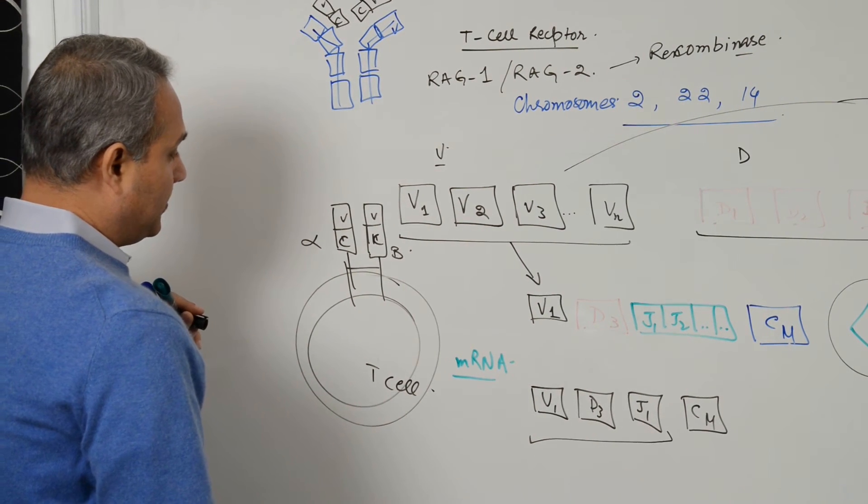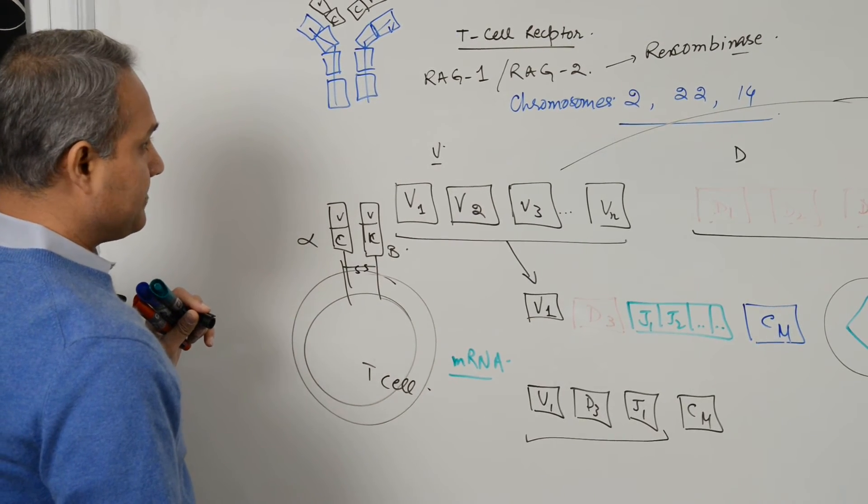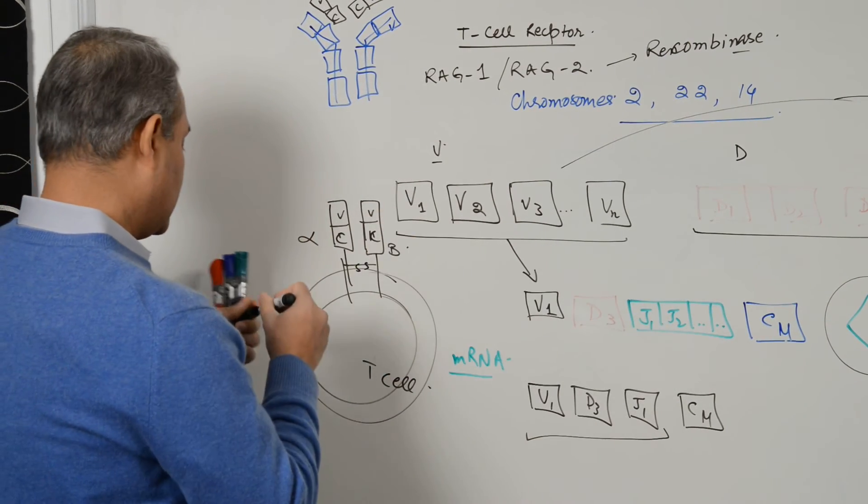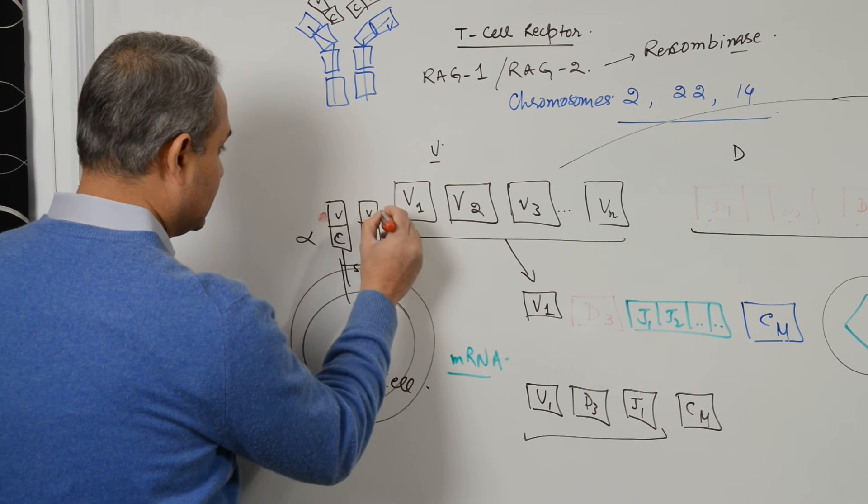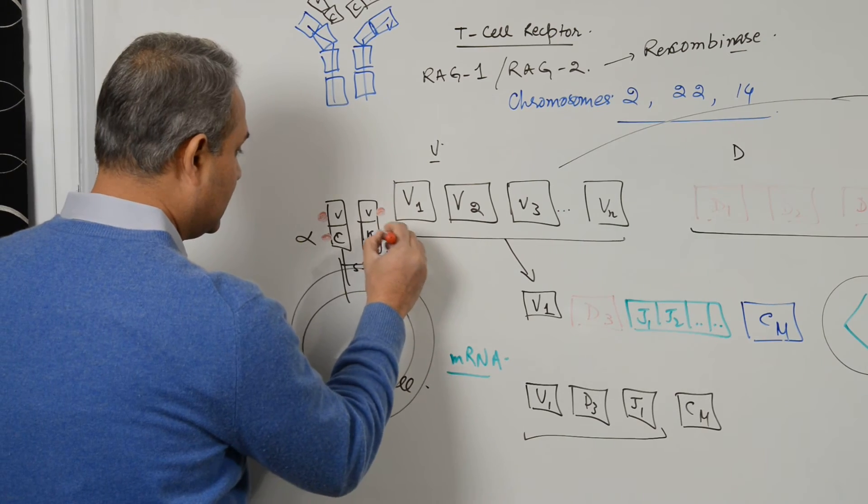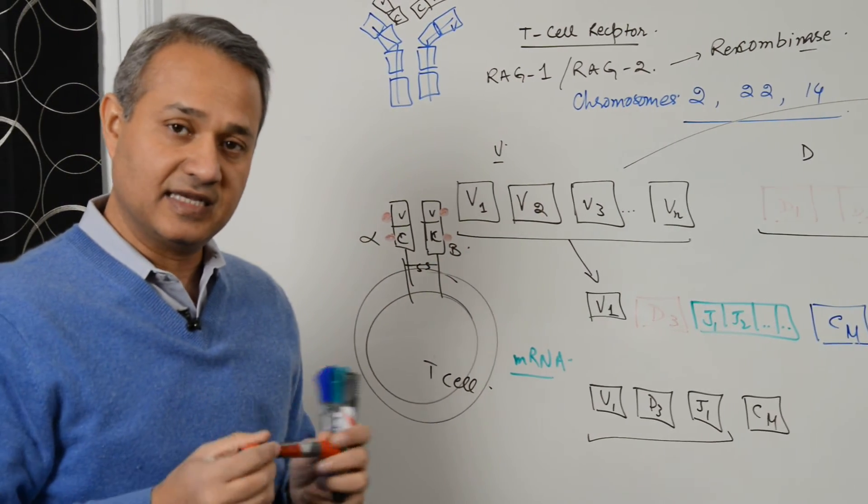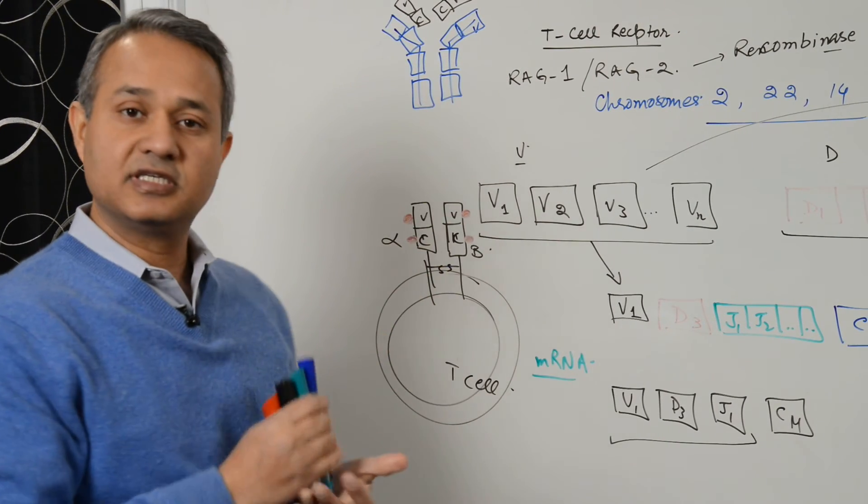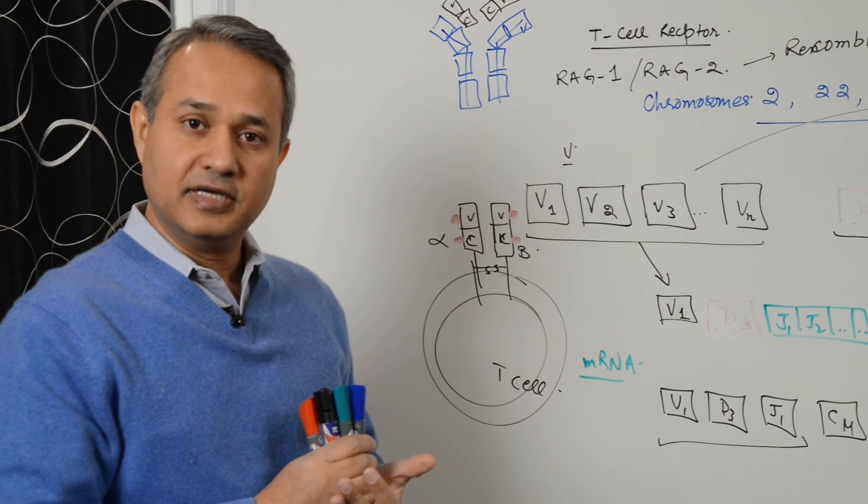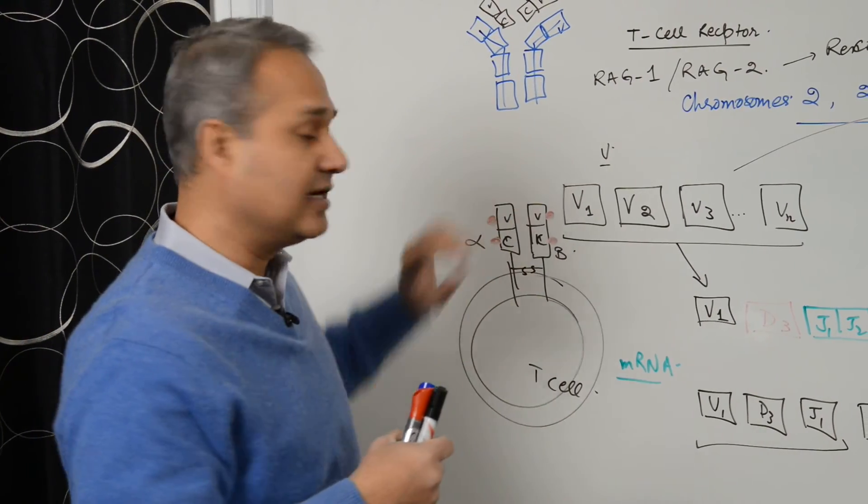Now, disulfide bonds here. One more thing: these chains or segments have got carbohydrates attached to them. So they are glycoproteins instead of just simple proteins. So that is what is the T cell receptor and that is what are the functions of the T cell receptor. The function of the T cell receptor is really antigen binding.